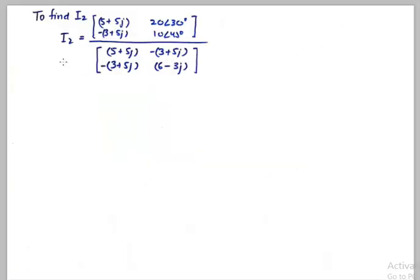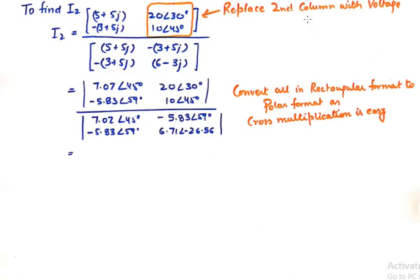And then let us say if we were to find I2 then what do we do? We take up the impedance matrix in the denominator and in the numerator we replace the column 2 with that of the voltages. So that is what we are doing here. We replace second column with the voltages. And if we were to find I1 we would have replaced this column with the voltages and we would have kept the impedances here. But let us say we have to find I2. So we do this.